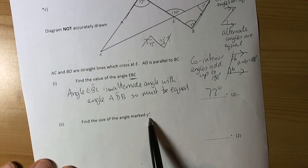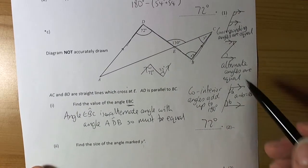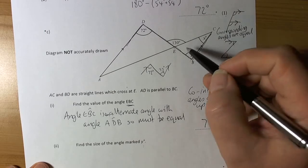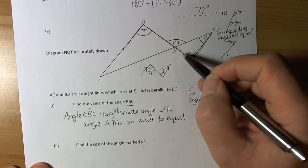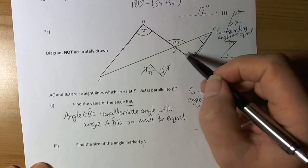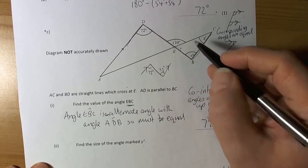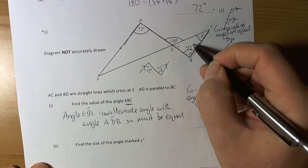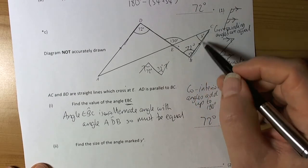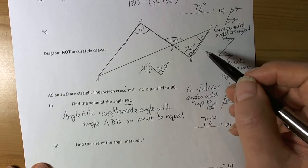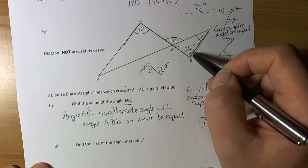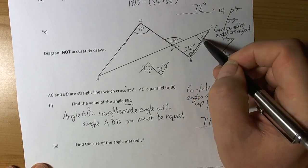It then says find the size of the angle marked Y. Well, the angle marked Y here. We can see that Y is part of this triangle. And we know that angles in a triangle add up to 180. So it would be nice if we knew what this angle here is, because we already know that this one is 72. Again, the advice is that once you work out angles, add them into the picture, because they might help you do other questions.